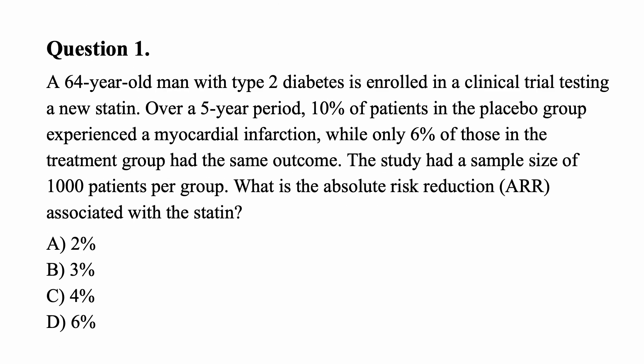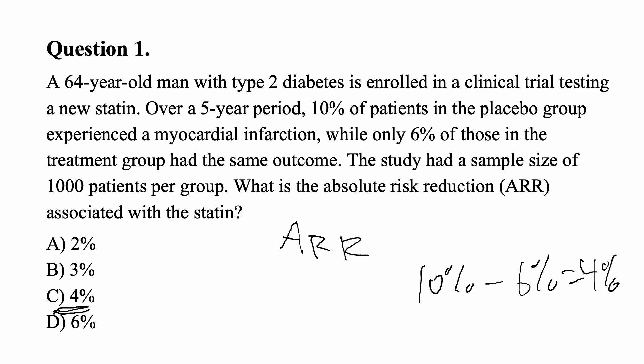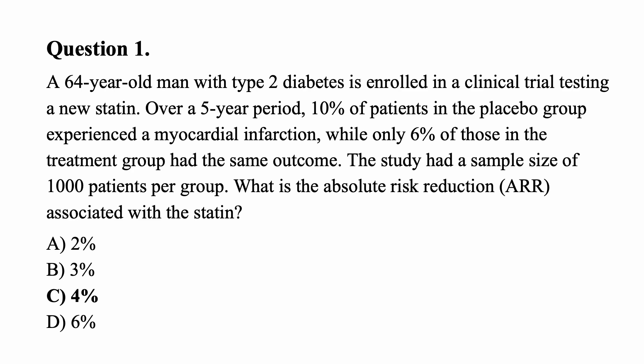Practice question one: A 64-year-old gentleman with type 2 diabetes is enrolled in a clinical trial testing a new statin. Over five years, 10% of patients in the placebo group experienced an MI, while only 6% of those in the treatment group had the same outcome. The study had a sample size of 1000 patients in each group. What is the absolute risk reduction? Absolute risk reduction is incidence in the control group minus incidence in the treatment group: 10% minus 6% equals 4%. The answer is C.